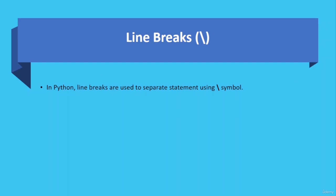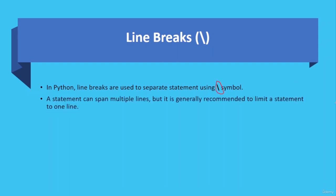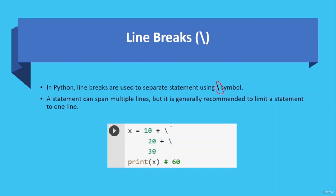In Python, line breaks are used to separate statements using the backslash symbol. A statement can span multiple lines, but it is generally recommended to limit a statement to one line. For example, here you can see adding three numbers and assigning the final value to x — you can do this in a single line, but you can use the line break with the backslash. If you print x, the result will be 60 because the sum of those three numbers is 60.